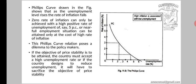The Phillips curve drawn in the figure shows that as the unemployment level rises, the rate of inflation falls. It is a smooth curve showing the unemployment rate against the rate of inflation. A zero rate of inflation can only be achieved with a high positive rate of unemployment, while near full employment can be attained only at the cost of a high rate of inflation, say around 5%.